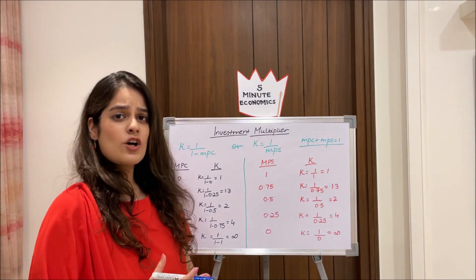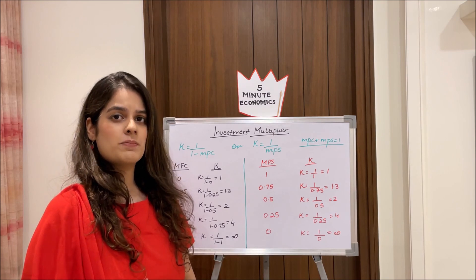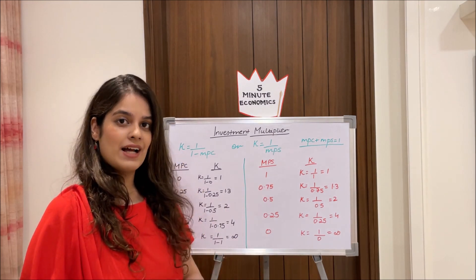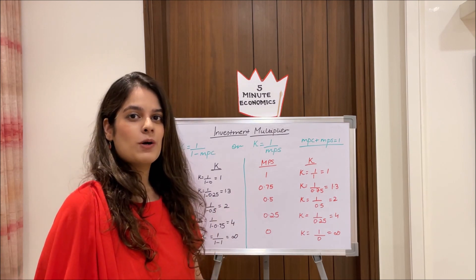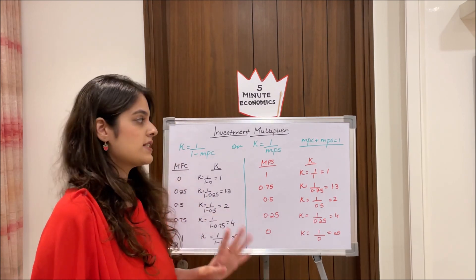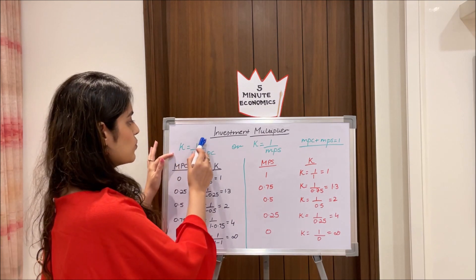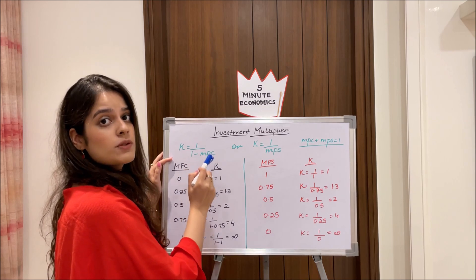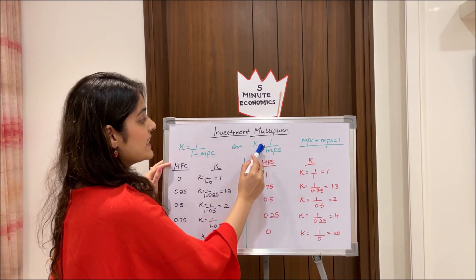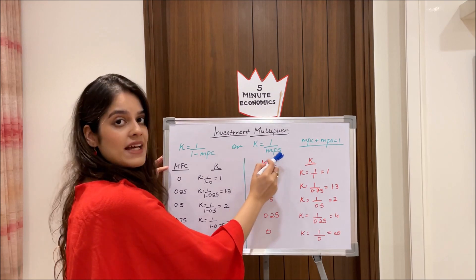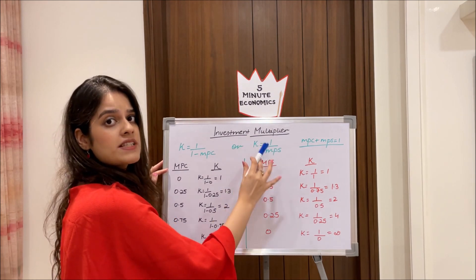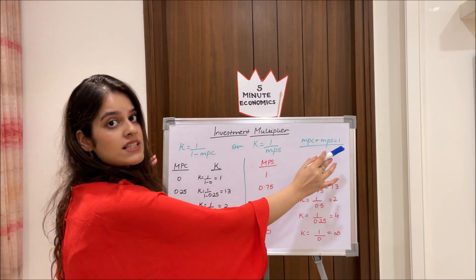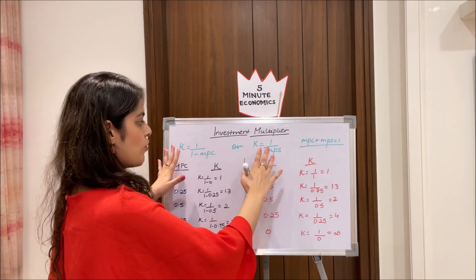There are two more formulas you need to memorize. First, k = 1 / (1 − MPC), where MPC is the marginal propensity to consume. Second, k = 1 / MPS, where MPS is the marginal propensity to save. Note that MPC and MPS together sum up to 1. Using these formulas, we can calculate the value of k.